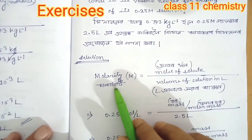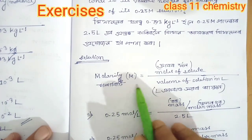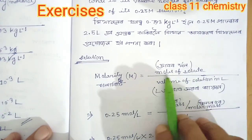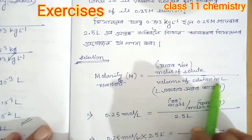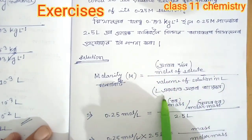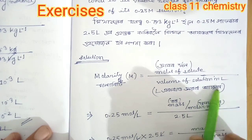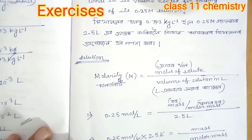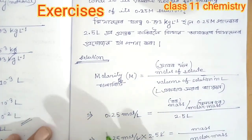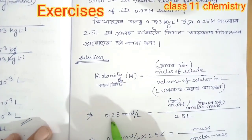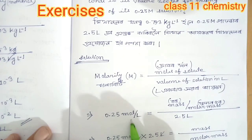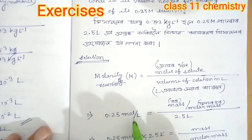Molarity is moles of solute divided by the volume of solution in liters. Liters are equal to moles. I would like to share the molarity. The molarity is 0.25 mole per liter.